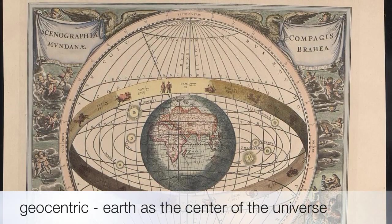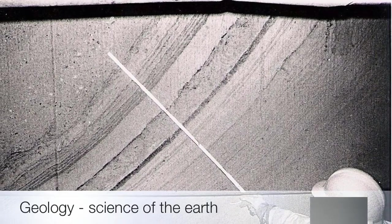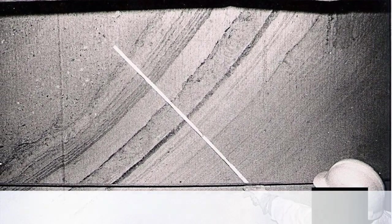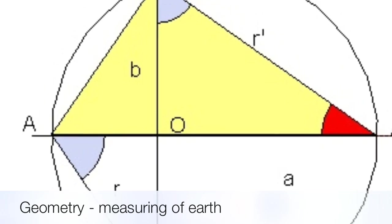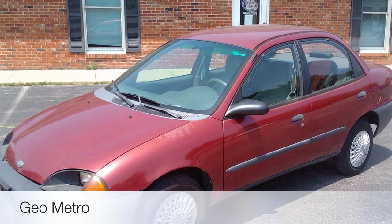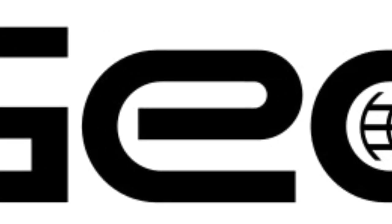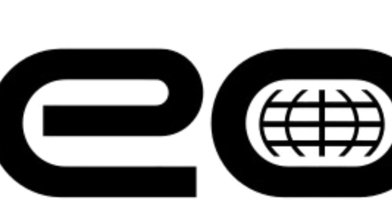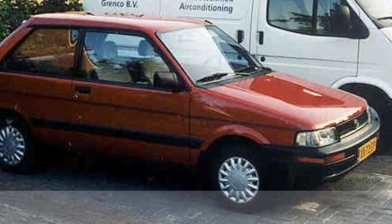By the way, geocentrism was incorrect. We have other words like geology, the science of the earth, or even geometry, which means to measure the earth. And of course the Geo Metro, the car I drove during college — that's actually how I remember geo means earth, because the Geo logo has a little globe in it. I eventually upgraded to a Subaru Justy.